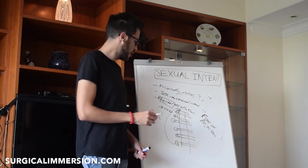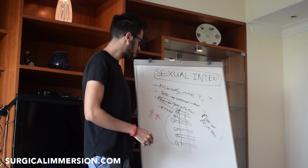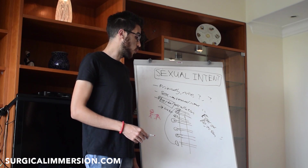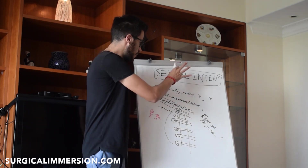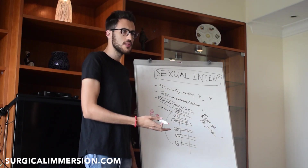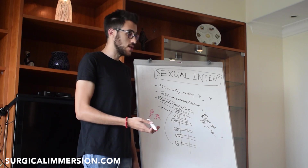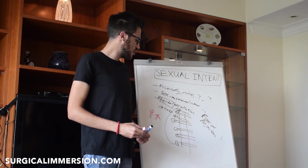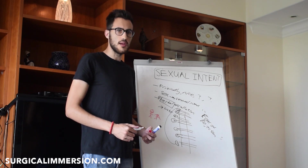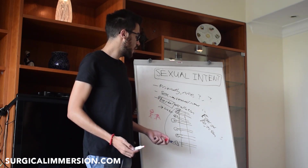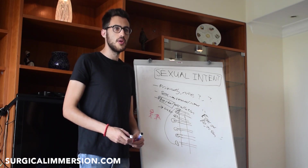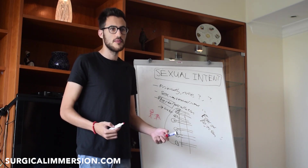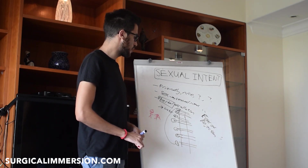Think about it this way: if you and her were suddenly alone in a bedroom, would she be completely shocked if you tried to sleep with her? If yes, your sexual intent hasn't come across. She needs to think 'of course, if I was alone with this guy, he's obviously going to try to sleep with me.' Not 'that would be so creepy and weird, he's just a friendly guy.' She needs to understand there's a possibility he'd try to sleep with her.